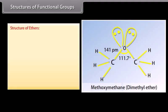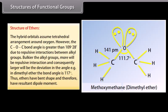Structure of ethers: the hybrid orbitals assume a tetrahedral arrangement around oxygen. However, the C-O-C bond angle is greater than 109°28' due to repulsive interactions between alkyl groups. The bulkier the alkyl groups, the greater the repulsive interaction and consequently the larger the deviation in angle. For example, in dimethyl ether the bond angle is 117°. Thus, ethers have a bent shape and therefore have a resultant dipole moment.